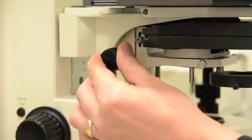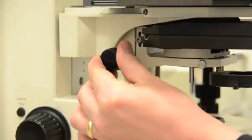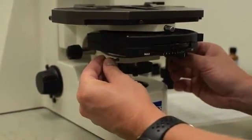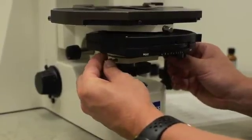Focus the edge of the diaphragm by adjusting the height of the condenser lens. Align the condenser by centering the field iris diaphragm using the condenser centering screws.